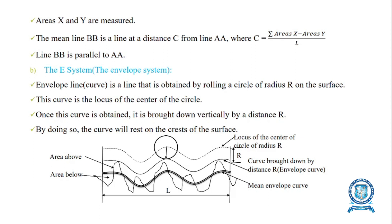The E system, or envelope system, uses an envelope line obtained by rolling a circle of radius R on the surface. This curve is the locus of the center of the circle, and it is brought down vertically by a distance R to obtain the reference line.